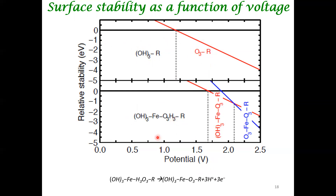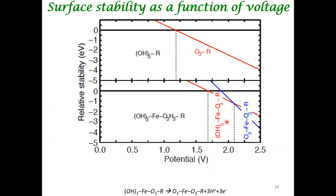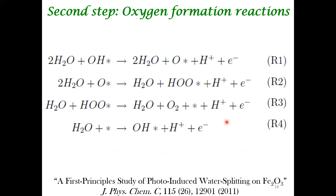Similarly, another termination can disproportionate, and its stability is influenced by anodic potential — until a particular point it is stable, but beyond that point a different termination becomes more stable. A few other terminations can also be considered; for example, one termination can transform into another by releasing protons and electrons. This type of surface Pourbaix diagram analysis allows us to computationally resolve which surface termination is dominant under given conditions.